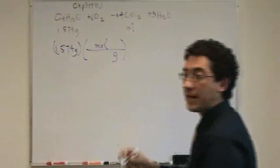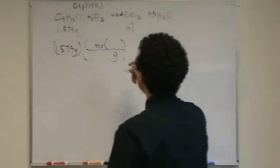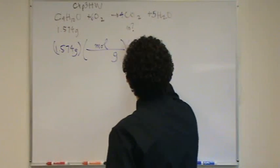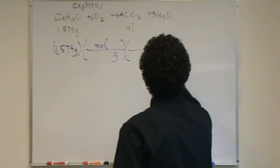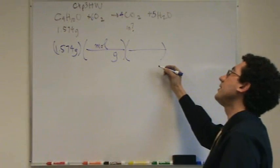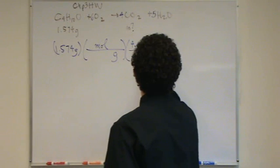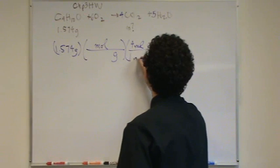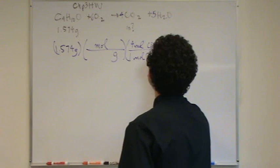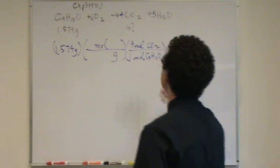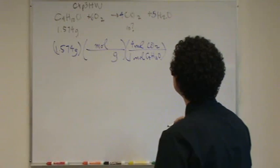Okay, so all you have to do for this one is go 1.574 grams. You'll need to find the molar mass of that alcohol and divide by it. So that's moles of the alcohol. Then we need 4 moles of CO2 for every 1 mole of the C4H10O, which is the alcohol.